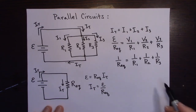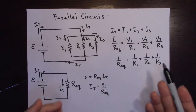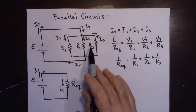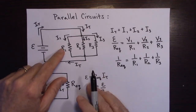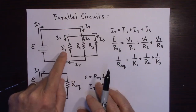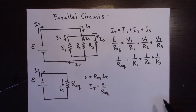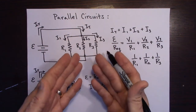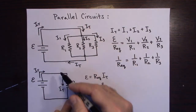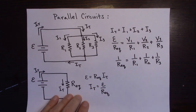For parallel circuits, the equivalent resistance must be less than the smallest individual resistor. So if the resistors were 10, 20, and 30 ohms, R_equivalent has to be less than 10 ohms. That makes intuitive sense: the more pathways you add, the less difficult it is for current to get through. Hope this helped — have a good day!